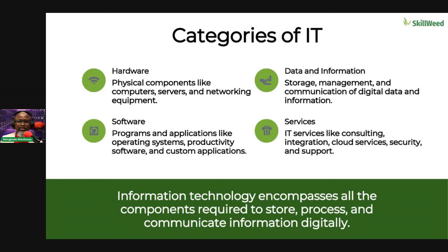The categories of IT include hardware, which covers the physical components like your servers and networking devices. Software is the programming and applications that run the operating system. We have data, which is information — mostly around storage management and communication of that data. And there are services like cloud services, security, and support. Information technology encompasses all the components required to store, process, and communicate information in a digital format.